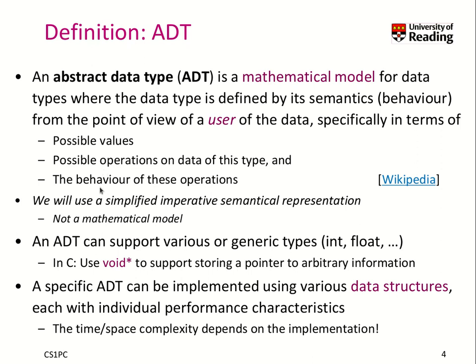As far as this lecture is concerned, we will use a very simplified imperative representation and not a mathematical model. In an ADT, you can generally support various types of data, or it can be generic, such that it deals with any types of numerical data — for instance, integer, float, and long. In C, if you want to represent generic types, we typically use a void pointer, which is a pointer to some undefined data structure, allowing us to store any type of information.